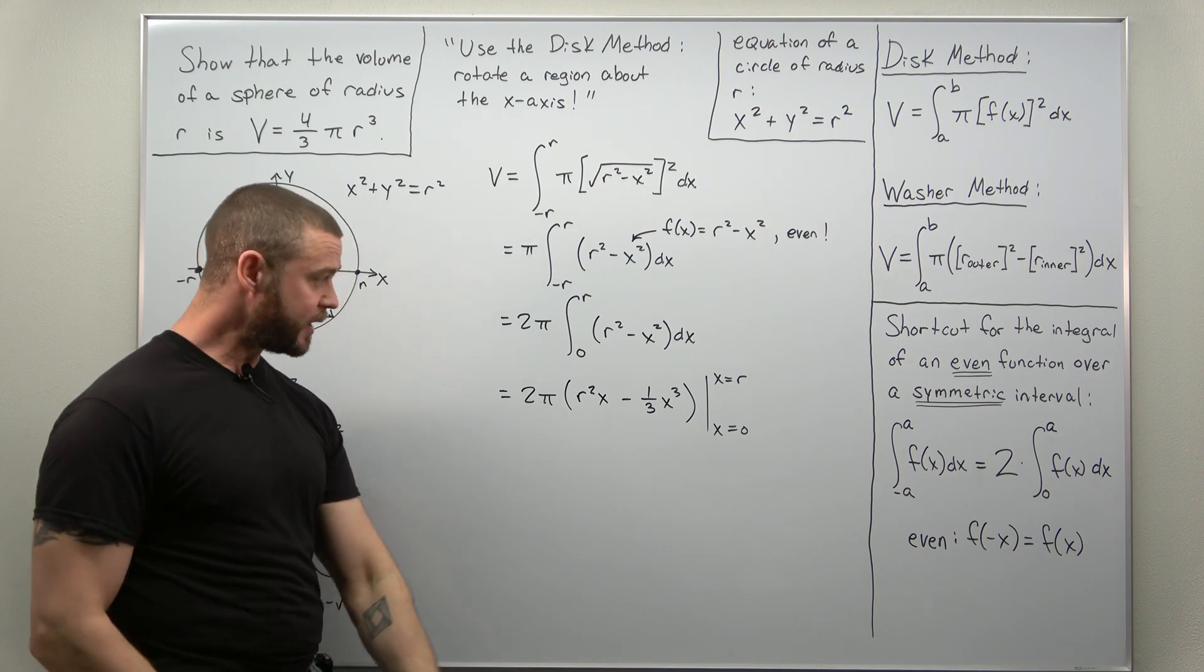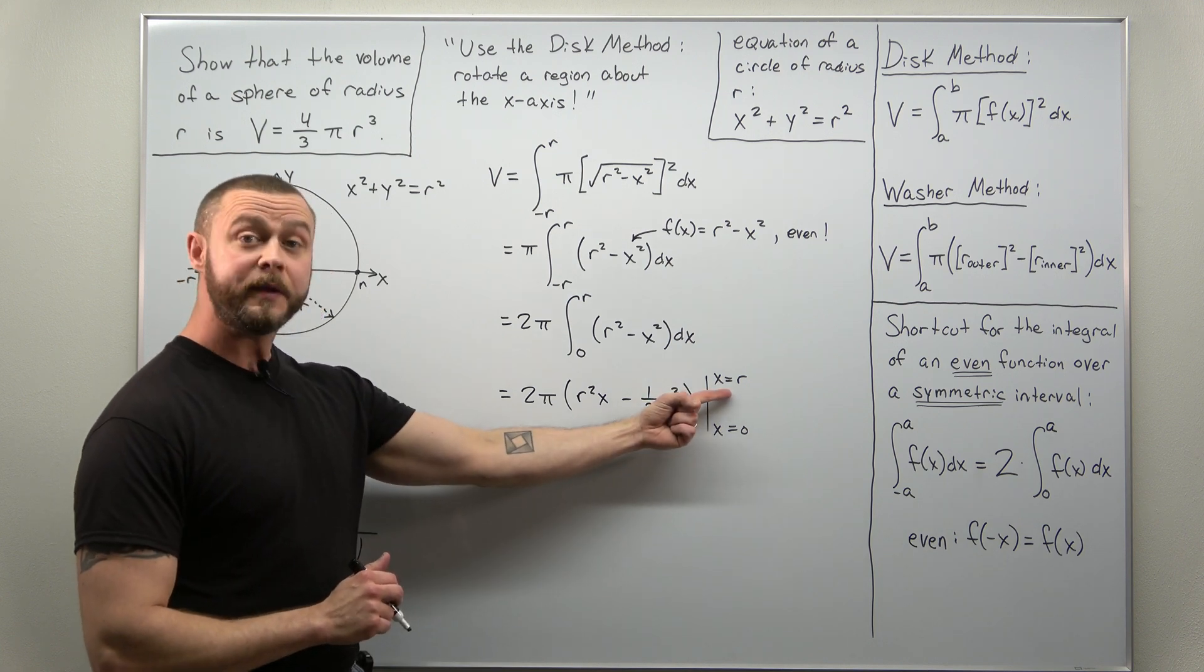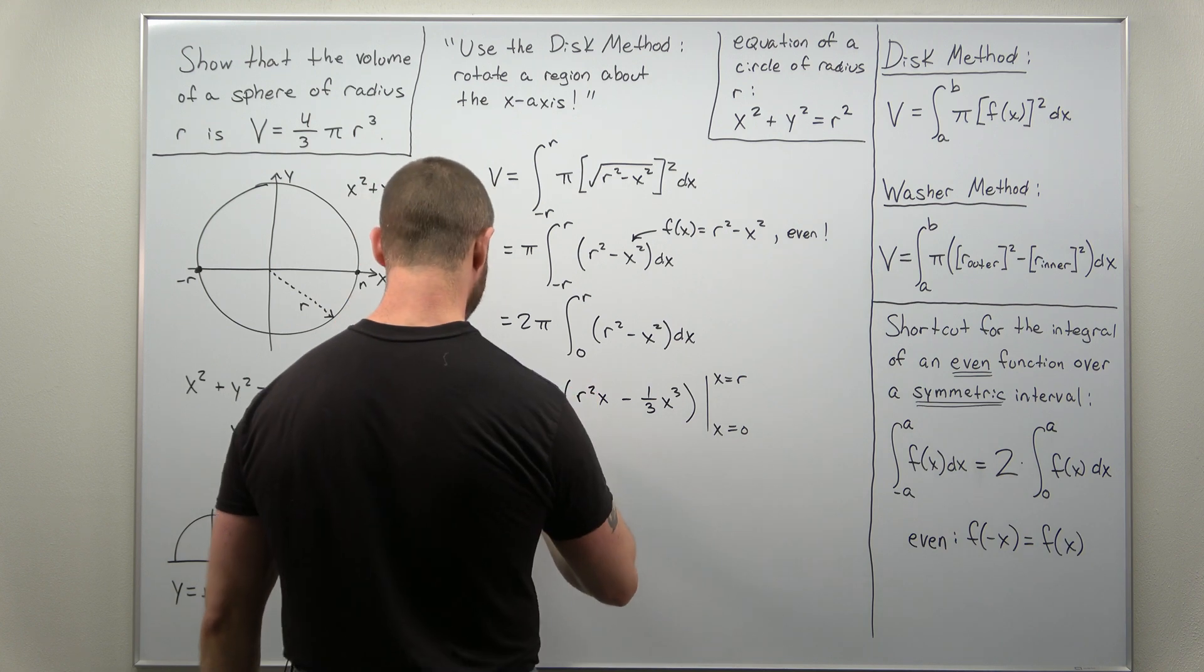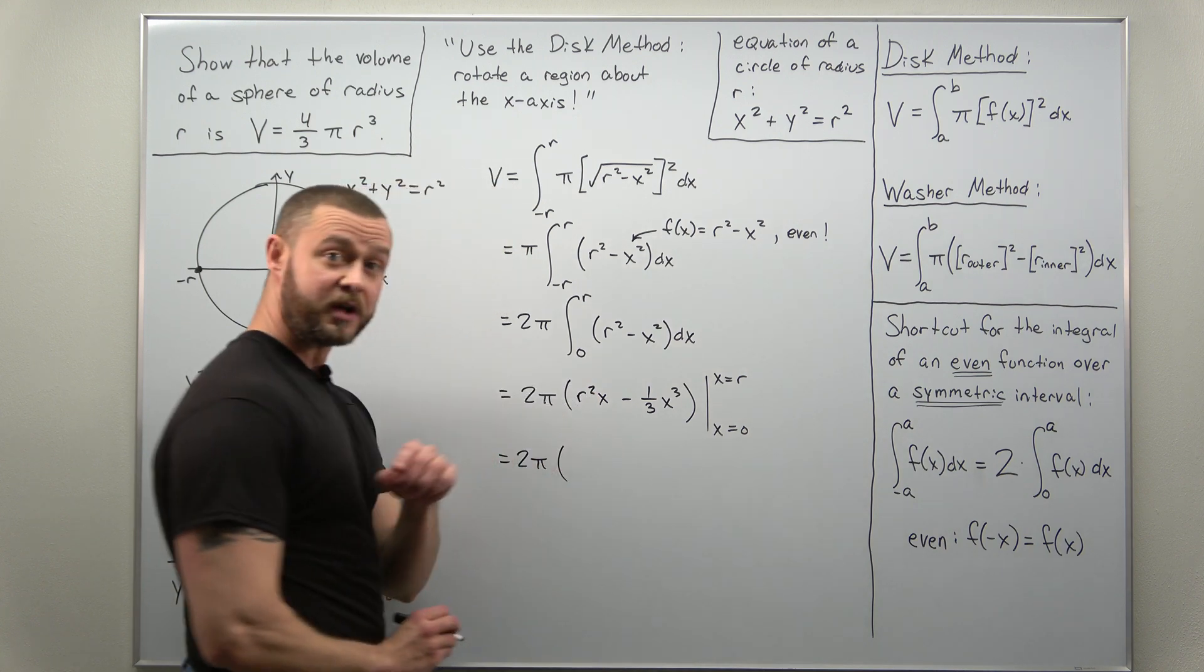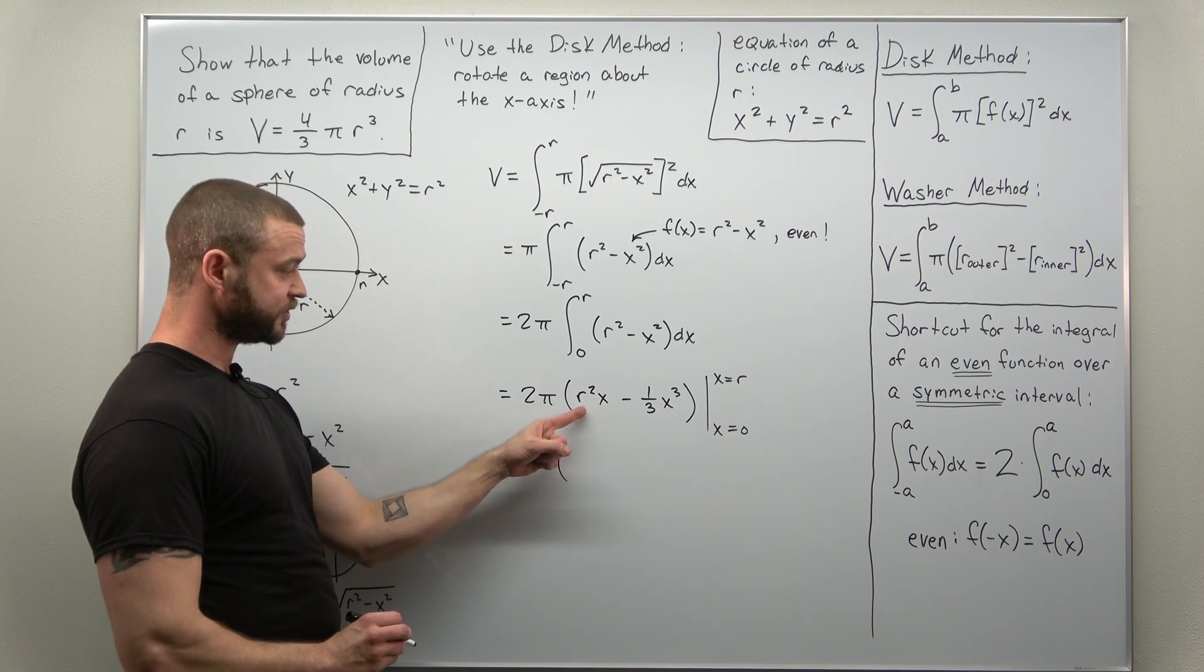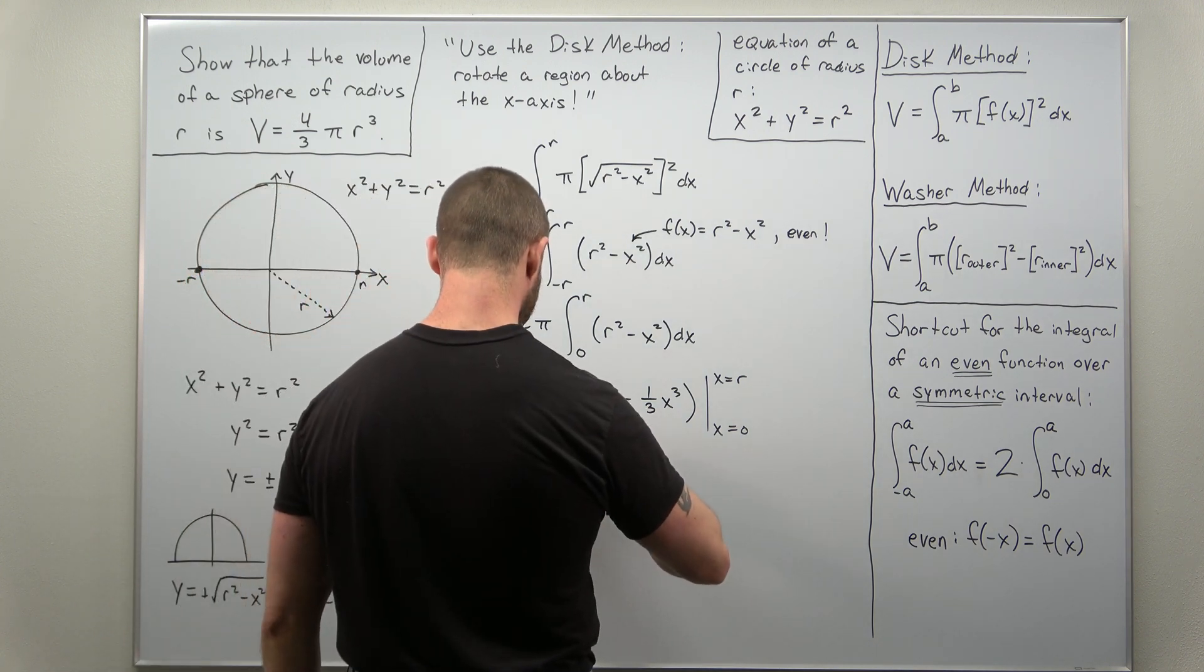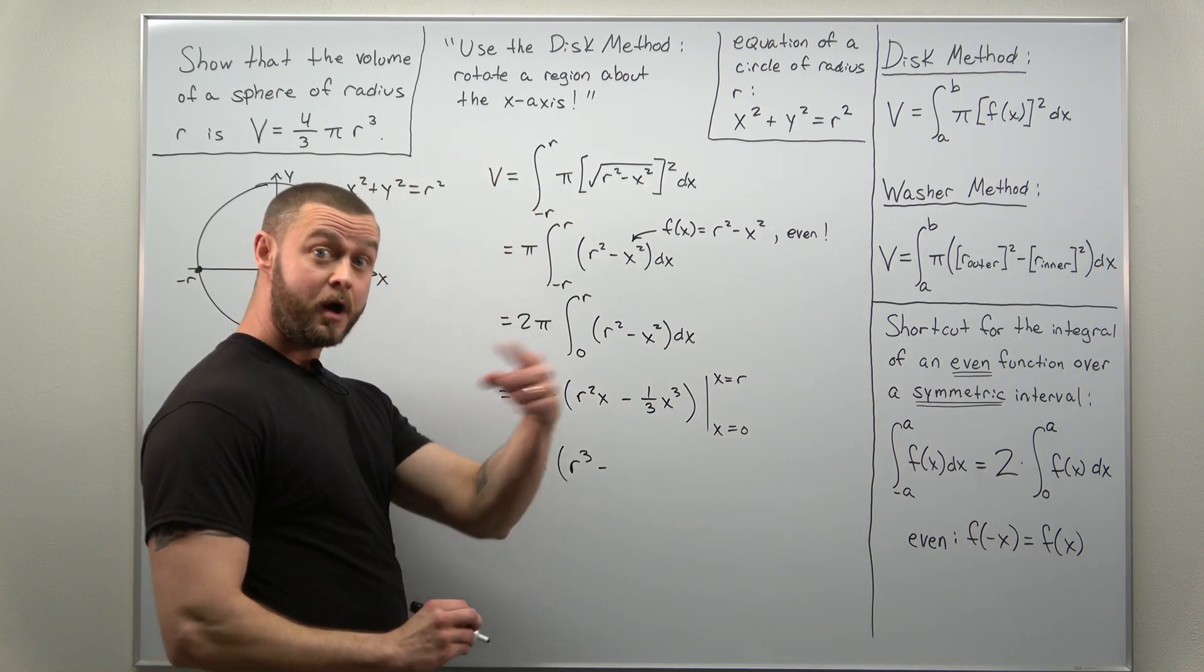So let's go ahead and plug in x equals zero, that evaluates to zero. Only part that survives is when you plug in x equal to r, so we have our factor of two pi out front. Plug in x is r, you're going to get r squared times r, r cubed, and then here minus one-third r cubed.